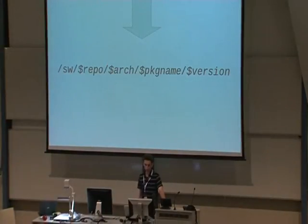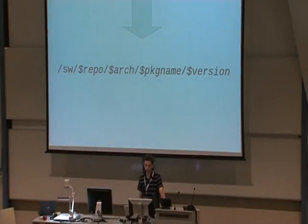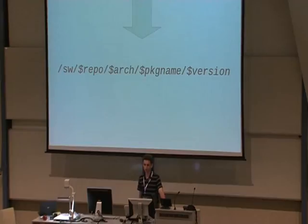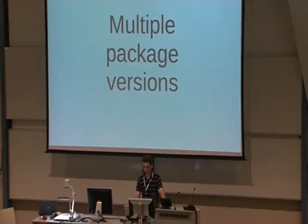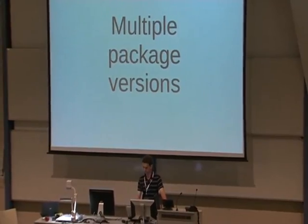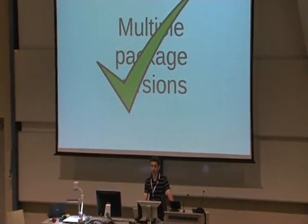In SISX, by contrast, everything gets installed into its own location. By default, that's a path which starts with /sw, which stands for software. Then there's a spot for repo — a broad package collection — then architecture, so x86_64 Linux or something, and finally a directory for the actual package and a directory for each version. This lets you have multiple versions of packages installed cleanly on your system at any point in time, which is a very good thing.